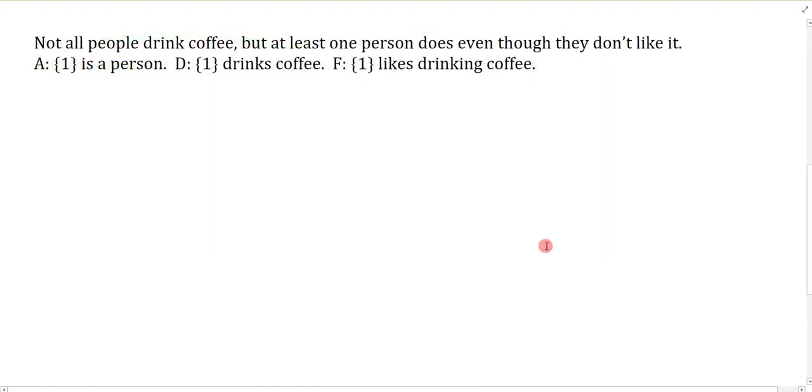Not all people drink coffee, but at least one person does even though they don't like it. So not all people drink coffee. This is again some sort of negated quantifier. There is my main connective, which is the comma but. So not all people drink coffee. That's just like above. It's not the case that for everything, if you're a person, then you drink coffee.